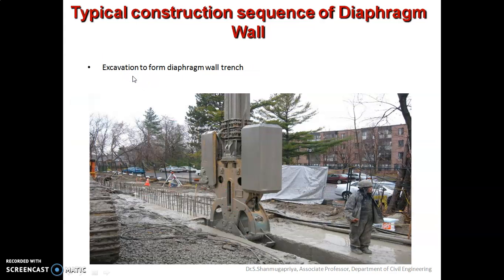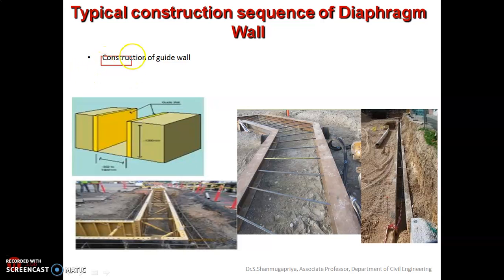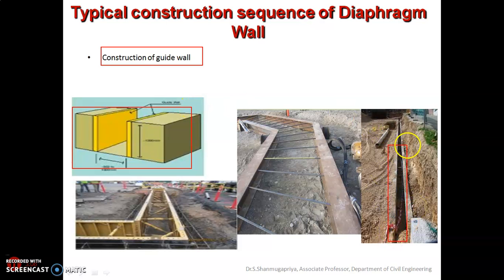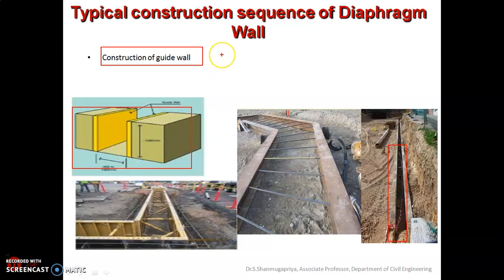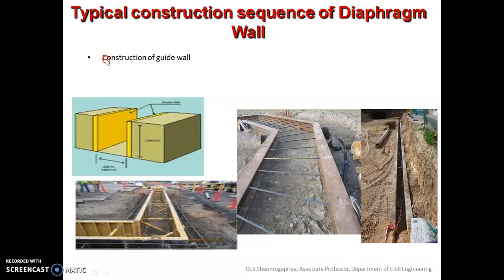The first step is the construction of the guide walls. In this picture you can see the guide walls. A guide wall is two parallel reinforced concrete beams constructed along the sides of the diaphragm wall so that they can act as a base or guide for equipment like clamshells used for excavation of the diaphragm wall trenches. This is a reinforced concrete wall constructed to a depth of 1 to 1.5 meters.